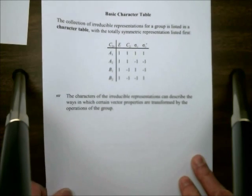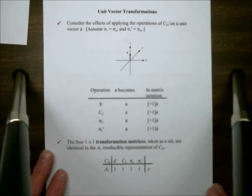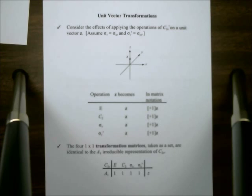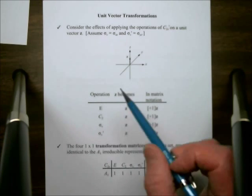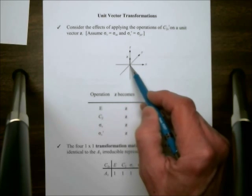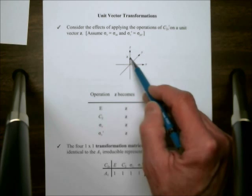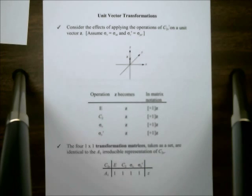We want to take a look at the basic character table and apply it to a vector. We're going to start out achingly simple. We're going to look at how a unit vector z is transformed under the operations of C2v. Here's my little vector z. Its base is at the origin of the Cartesian coordinate system, 0, 0, 0. And it extends a unit up along z. So it's simply described in terms of one coordinate.